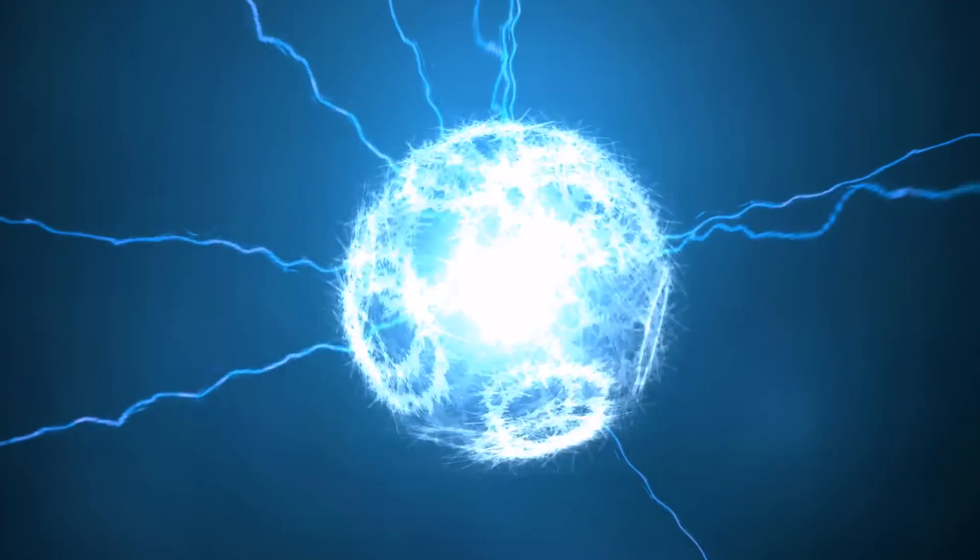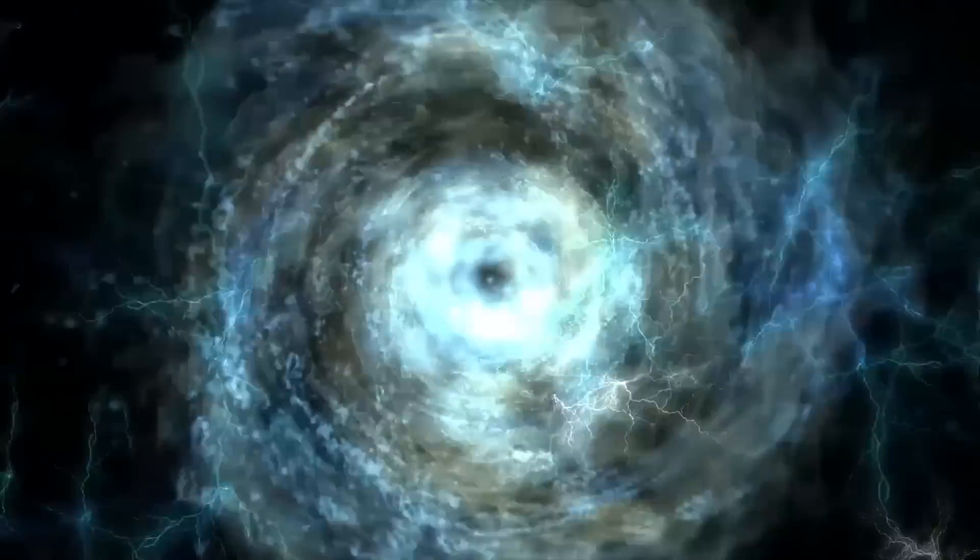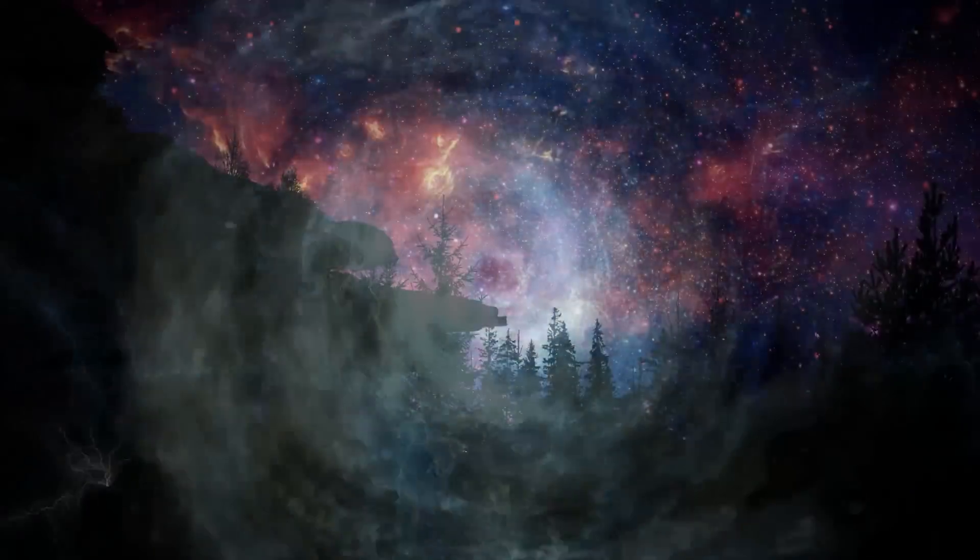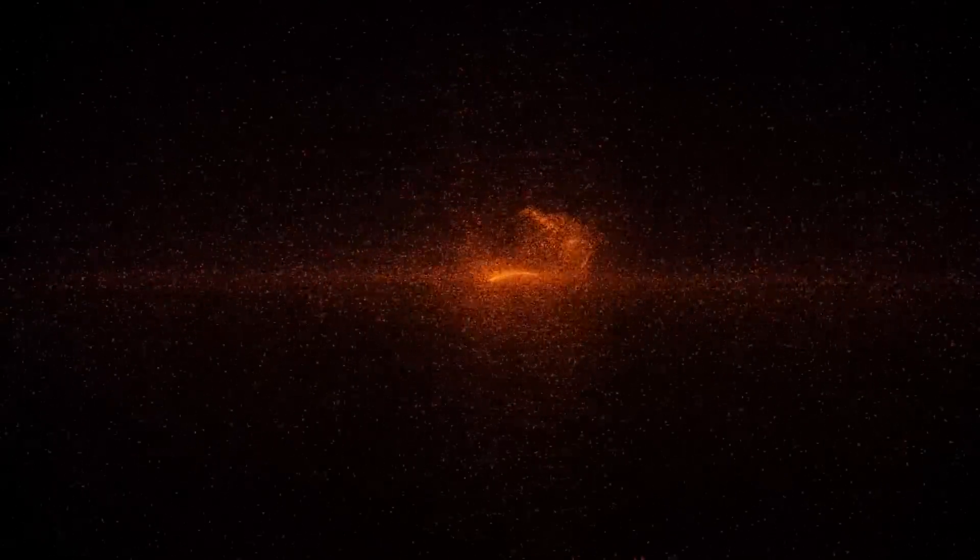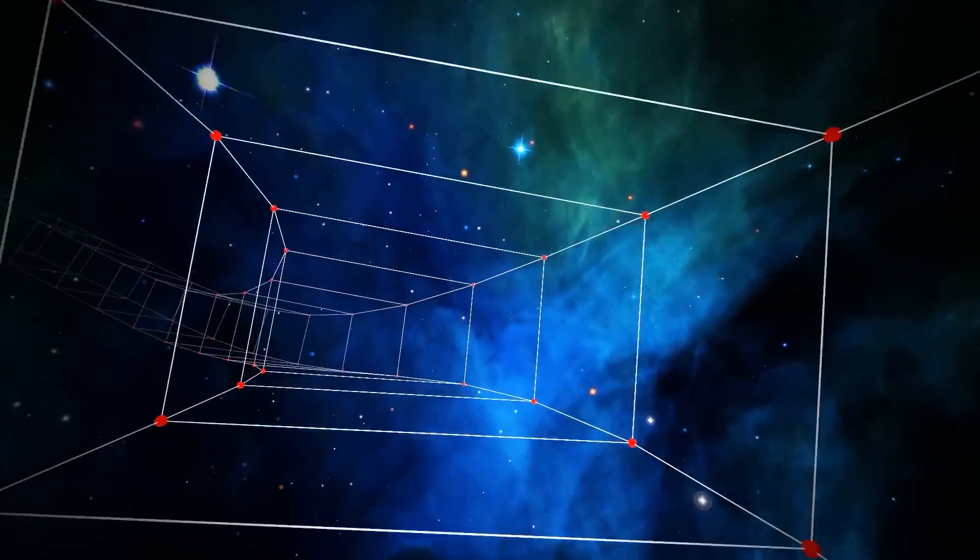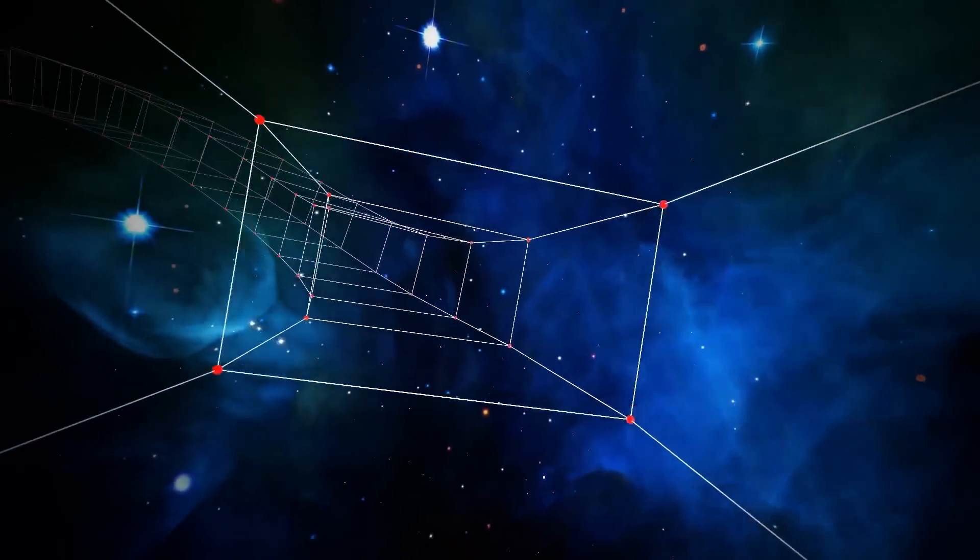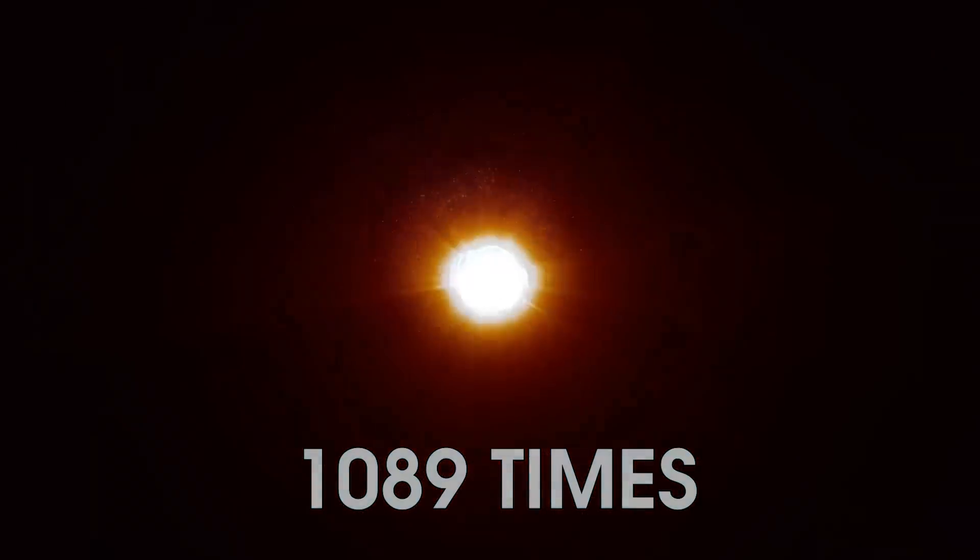Moreover, we know how this radiation evolves in energy as the universe expands. A photon's energy is directly proportional to the inverse of its wavelength. When the universe was half its size, the photons from the Big Bang had double the energy. While when the universe was 10% of its current size, these photons had 10 times the energy. If we're willing to go back to when the universe was just 0.092% of its present size, we'll find a universe that's 1089 times hotter than it is today, around 3000 degrees kelvin.